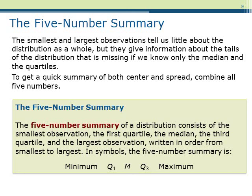Now if we put the median and the quartiles together with the smallest and largest observations, we get what's called the five-number summary. The five-number summary gives us a quick sense as to the center and spread of a data set. It is typically written in order, as shown below.